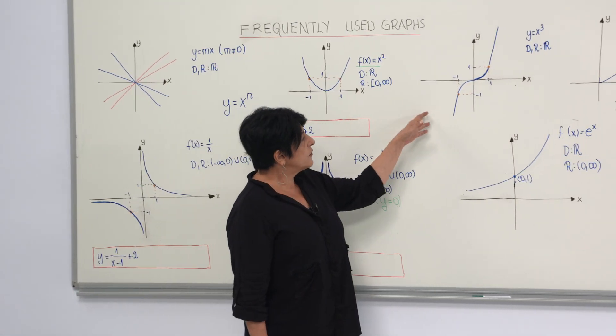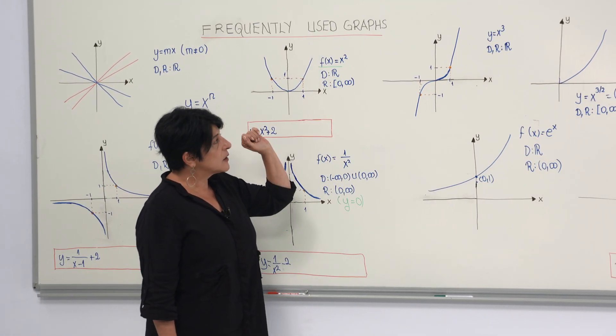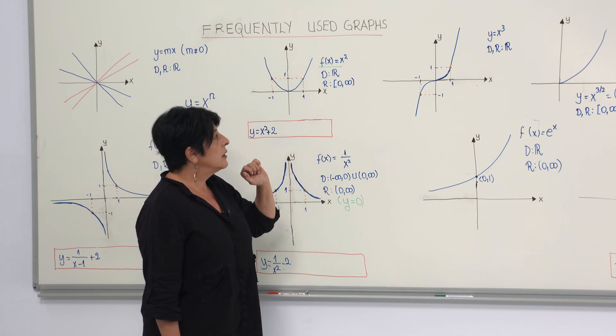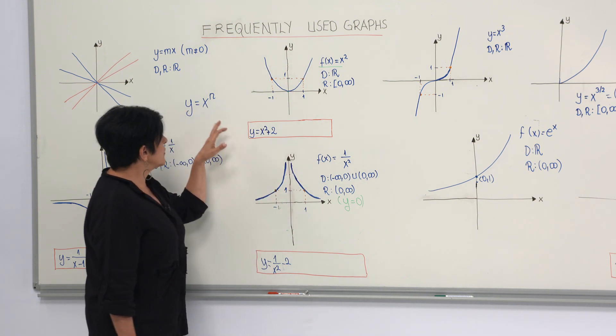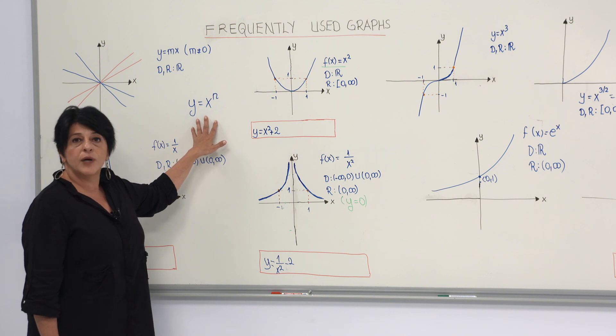The second and the third graphs are the graphs of f(x) equals x squared and x cubed. Actually, these are the graphs of the form y equals x to the power n, where n is a positive integer.